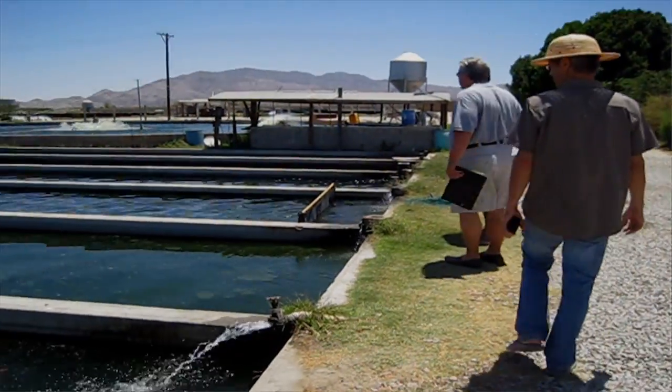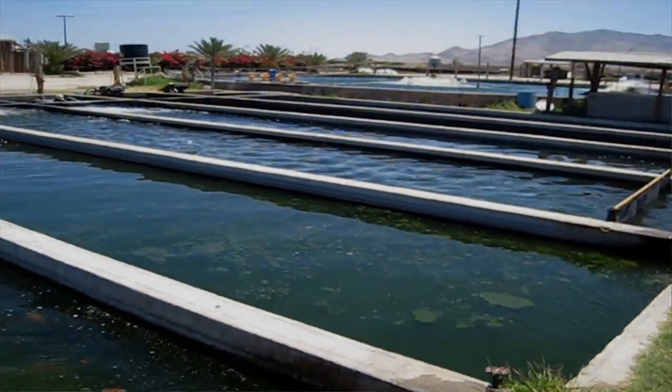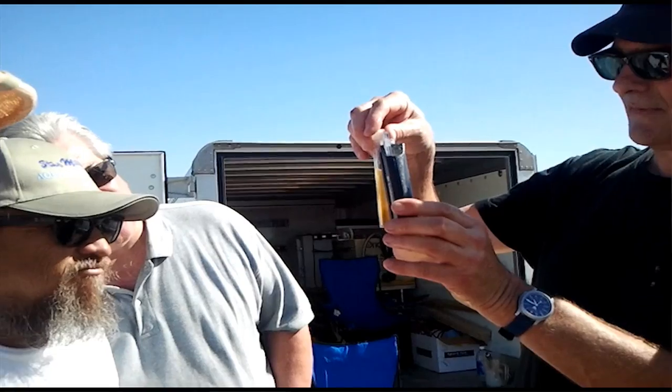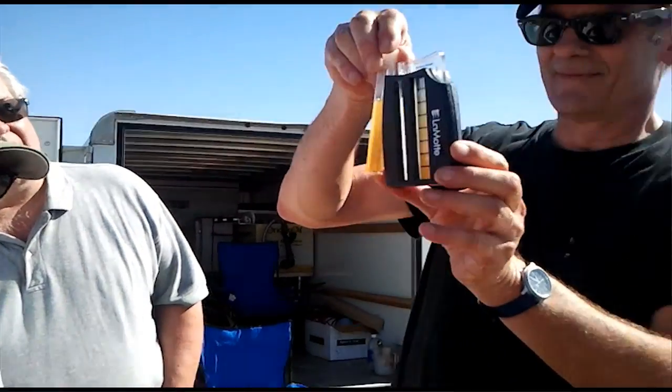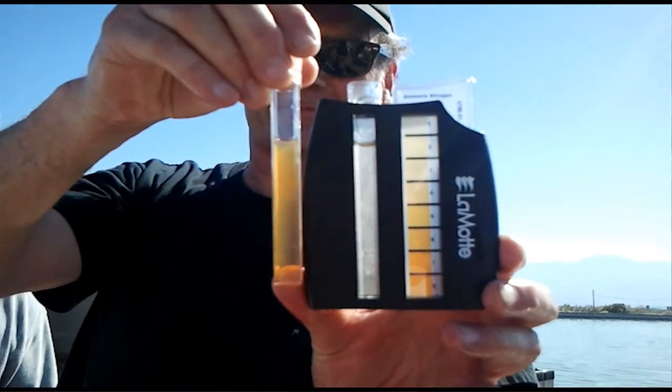He's had this big problem of getting rid of ammonia. In fact, he has this natural pond system that takes him between six and eight weeks to get rid of the ammonia. He was really happy to see that we could do the same process that took him eight weeks in 30 seconds.